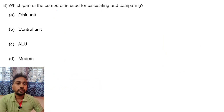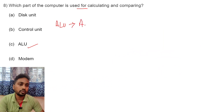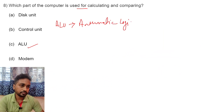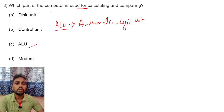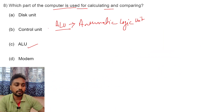Which part of the computer is used for calculating and comparing? ALU — Arithmetic Logic Unit. It performs all mathematical functions like addition, subtraction, division, multiplication, and some logical functions like comparing. So in the computer, ALU is used for calculating and comparing. Option C is the right answer.